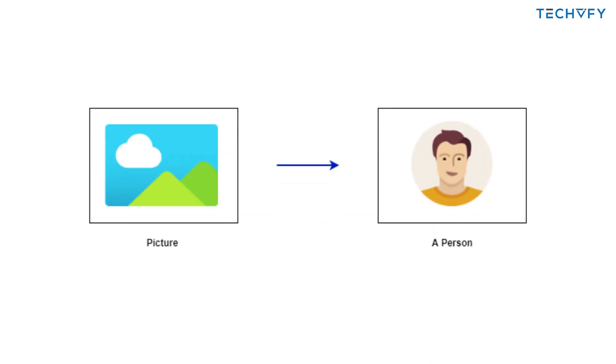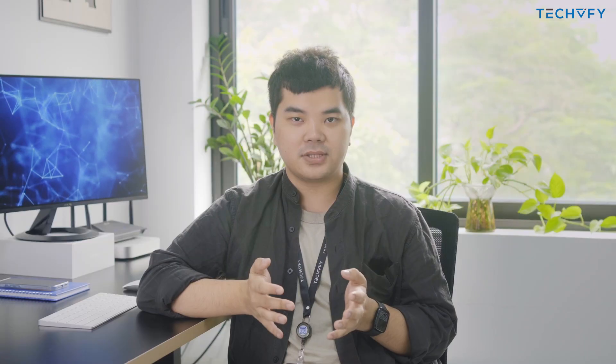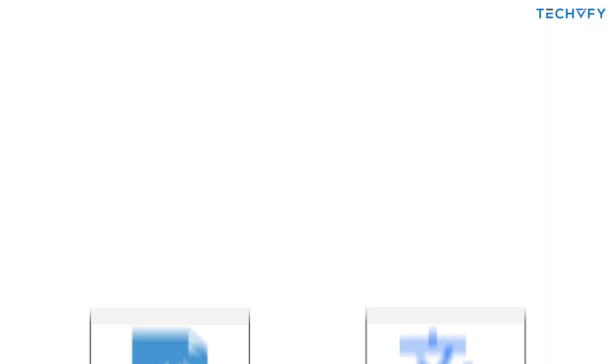For example, giving a model a picture will allow it to identify whether there are crabs, people, or animals in the image. Another example: given an audio file, it will provide you with the text that was spoken. The accuracy of this classification requires a large dataset to be trained. The more data that is available, the better the model can be.